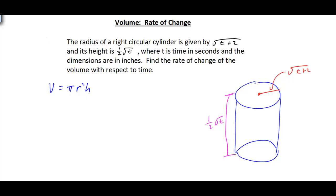At this point we simply substitute in our given information. We have pi times the radius — the radius is the square root of t plus 2 — squared, and that's multiplied by the height, which is one half the square root of t.